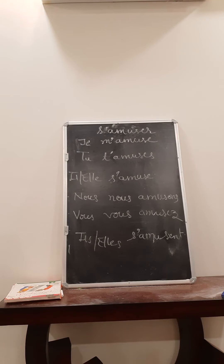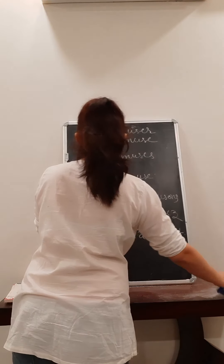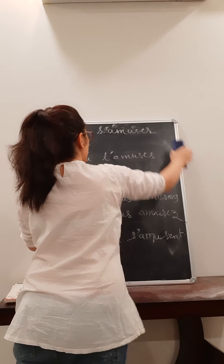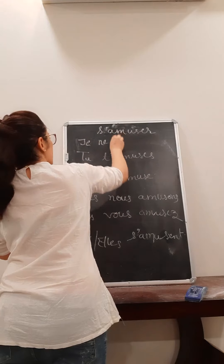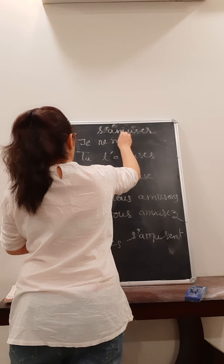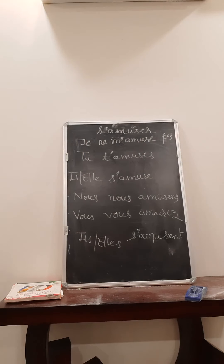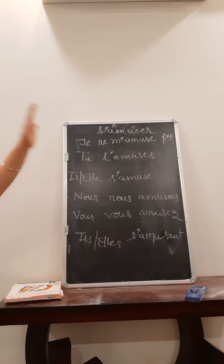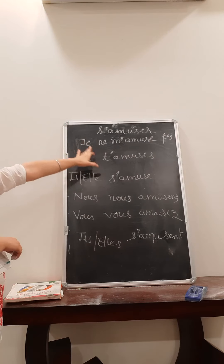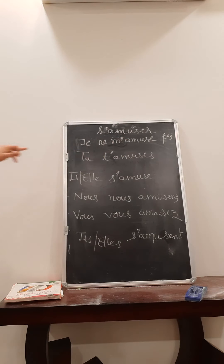Now, how to negate this verb? If you want to say I'm not enjoying myself or I'm not taking a bath, we negate from the pronoun. Your pronoun will come between 'ne' and 'pas'. What we usually do is put 'ne' before the verb and 'pas' after the verb, but here we need to take this pronoun in between — it also comes between 'ne' and 'pas'.